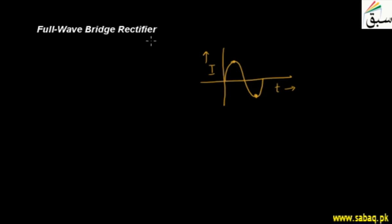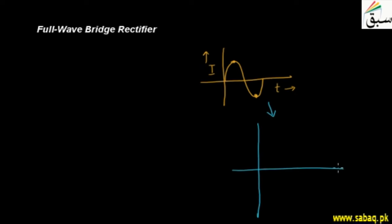The rectifier takes alternating current, whose direction keeps changing, and modifies it. Here I am making a graph again which is modified by the rectifier. You can see that the current is now flowing in only one direction. This is a rectifier.